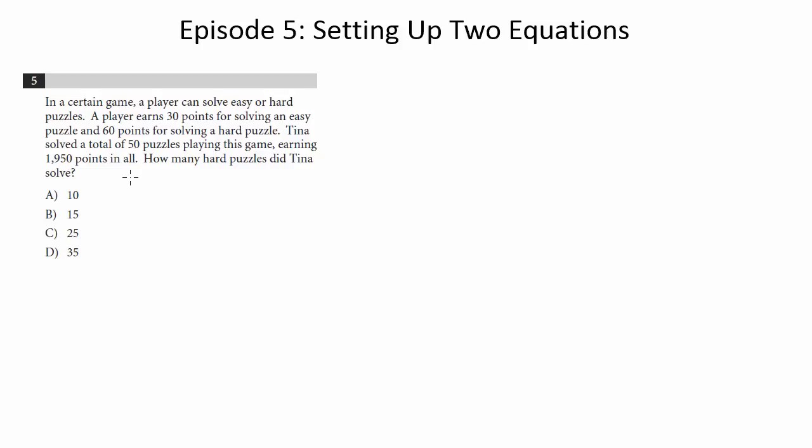And when you see this problem type, you know you have to set up two equations and two unknowns. So let's see how we're going to do that here. In a certain game, a player can solve easy or hard puzzles. A player earns 30 points for solving an easy puzzle and 60 points for solving a hard puzzle. Tina solved a total of 50 puzzles playing this game, earning 1950 points in all. How many hard puzzles did Tina solve?